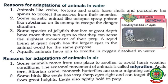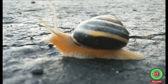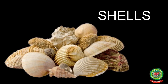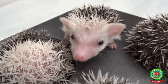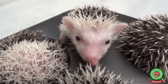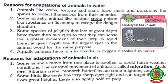Animals like crabs, tortoise, and snails have a shell on their body which provides them protection from enemies. On the other hand, porcupine has spines on its body which also provide protection from enemies.